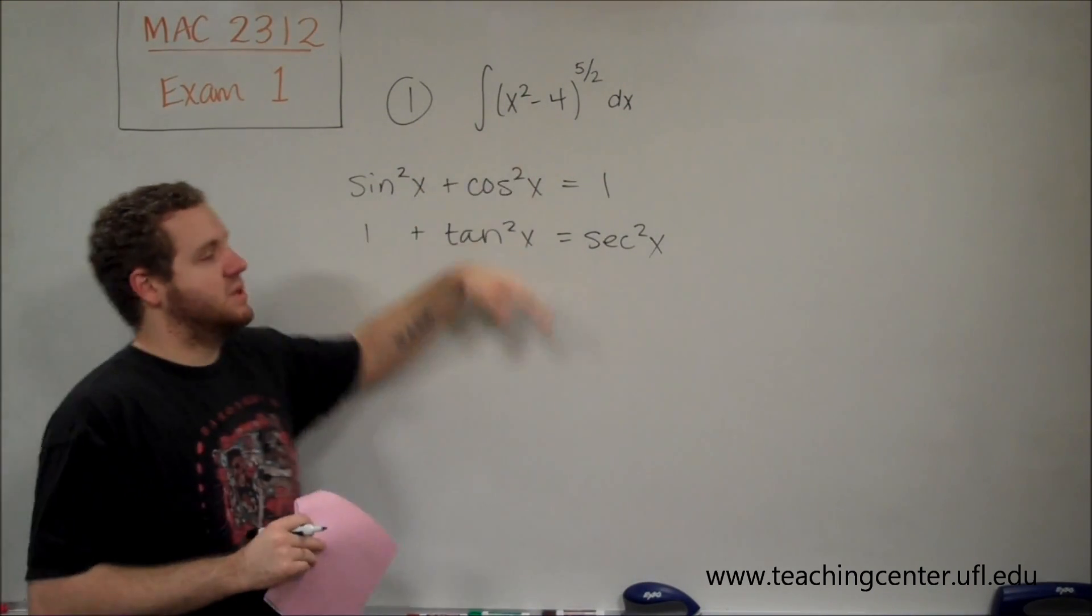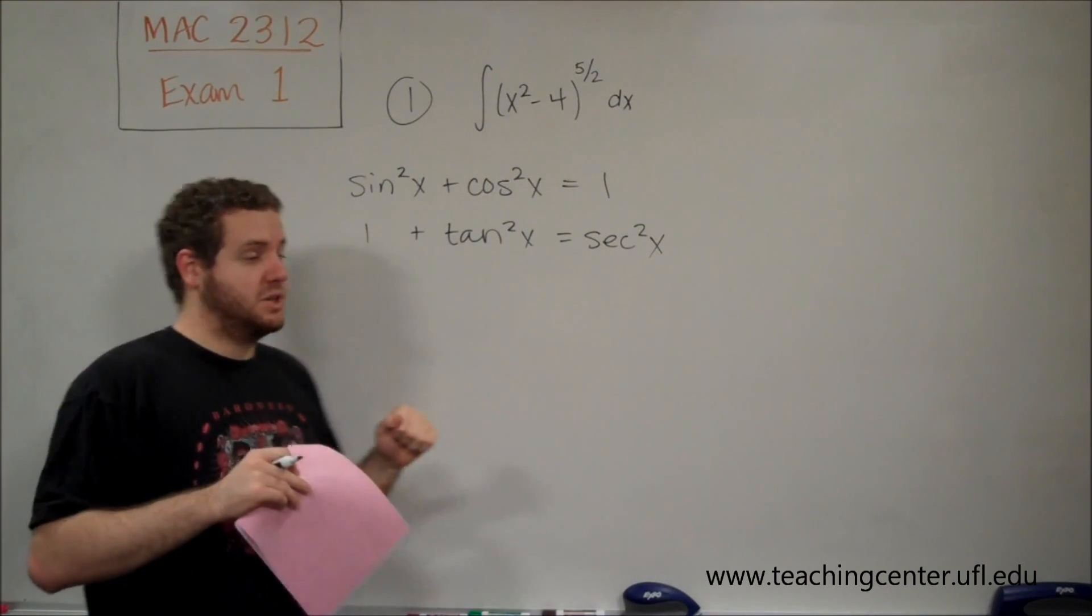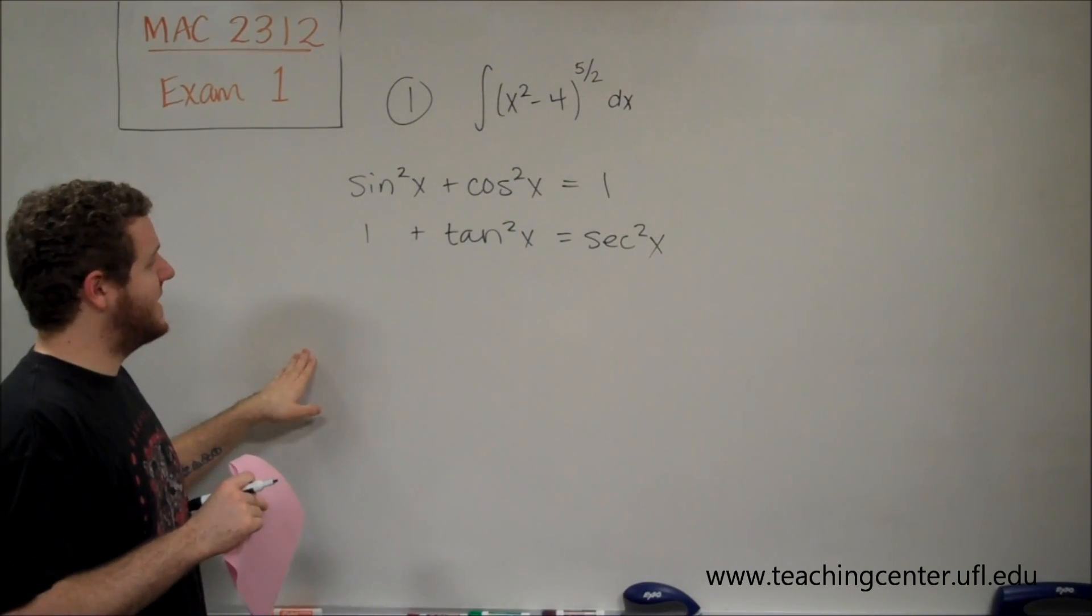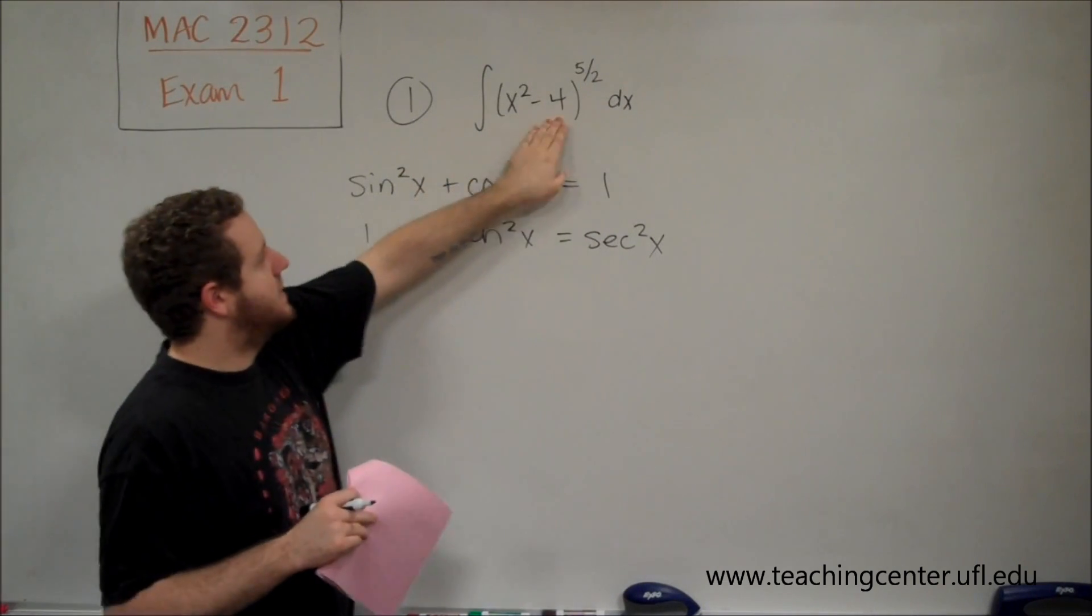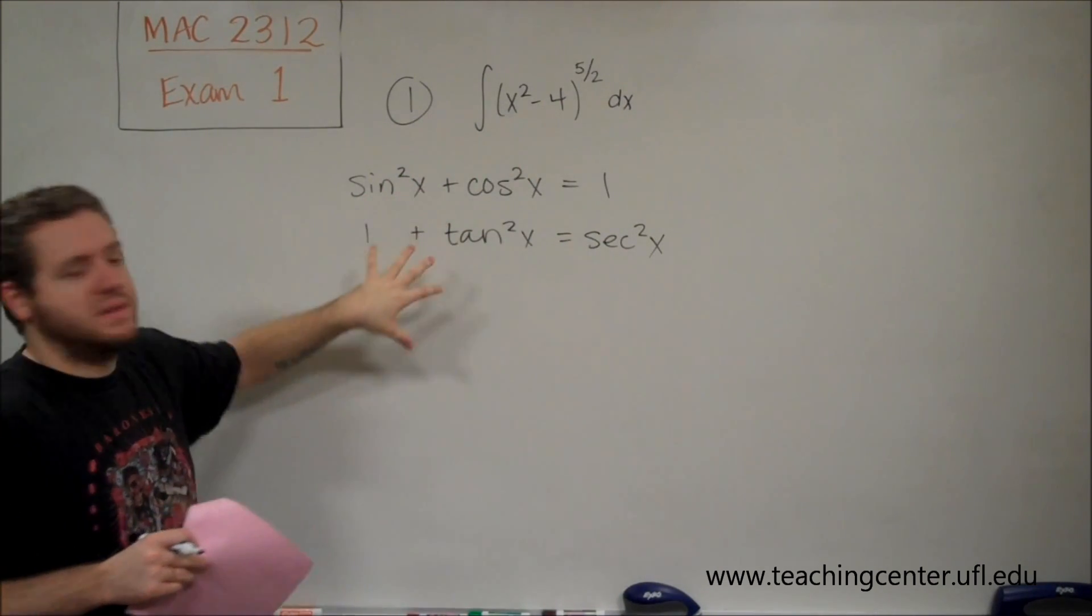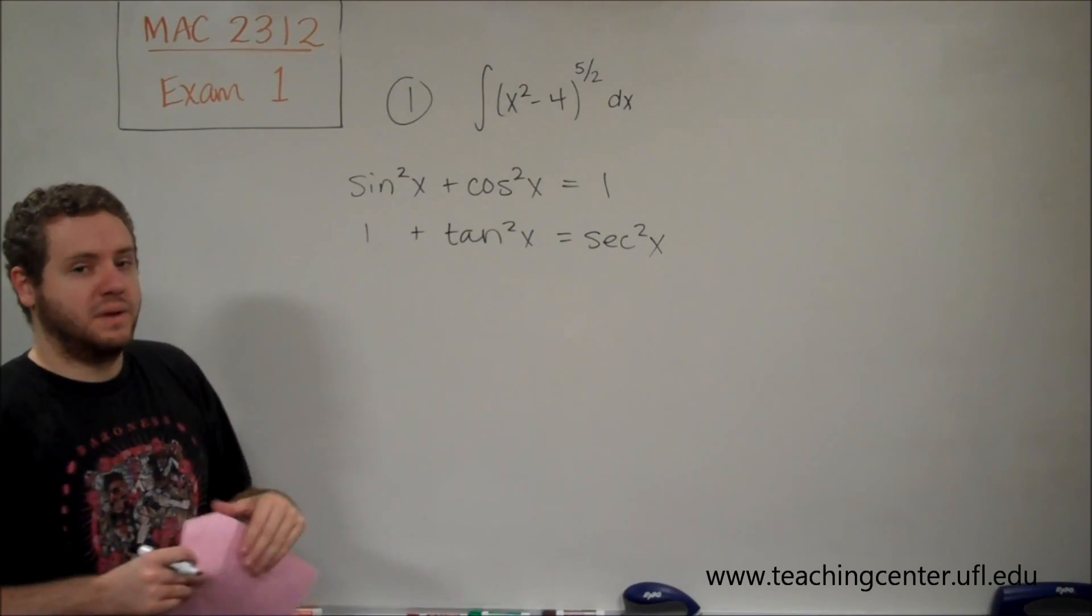So in order to use the most appropriate substitution, what we need to have is a trig function minus a constant in one of these identities. And then that will be the one that we end up using.